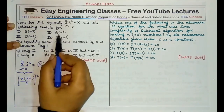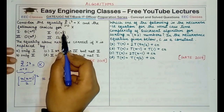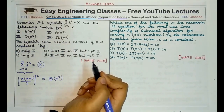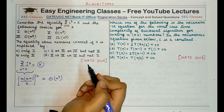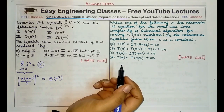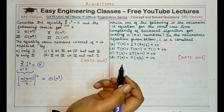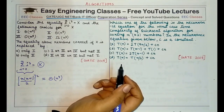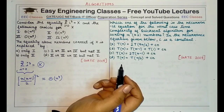Coming to the second option, theta of n raised to power 5 — this option is not correct. A theta bound means it is a tight bound. However, we have established that this expression evaluates to a tight bound of n⁴, not n⁵. Therefore, we cannot say it is a theta bound of n⁵.